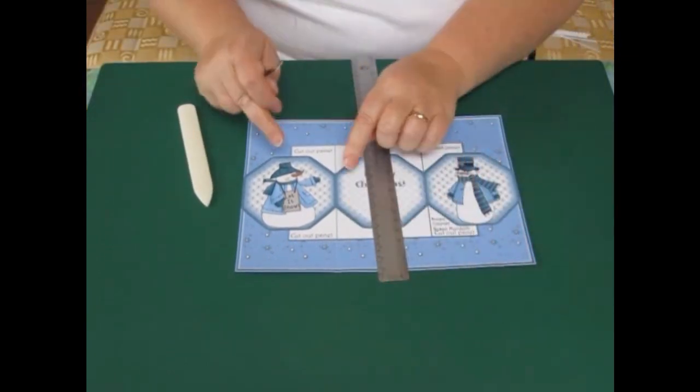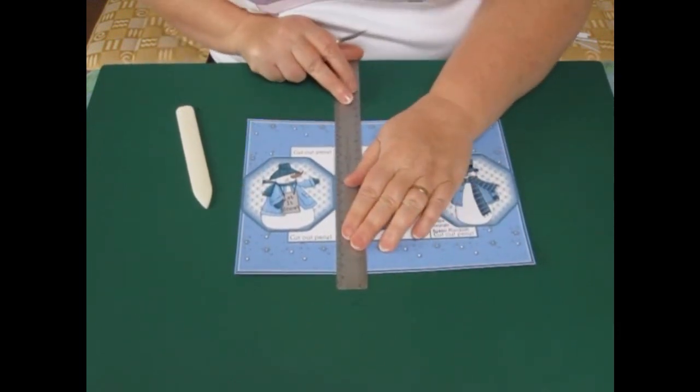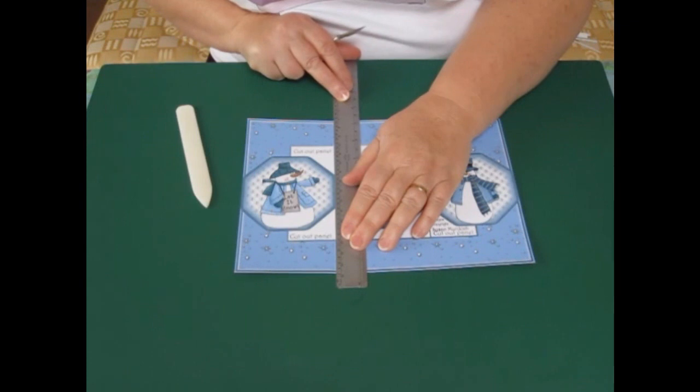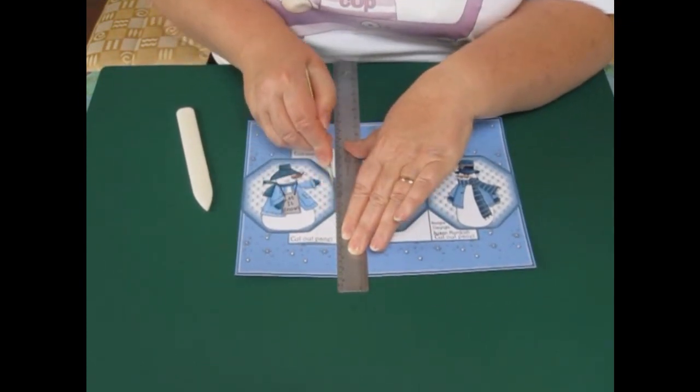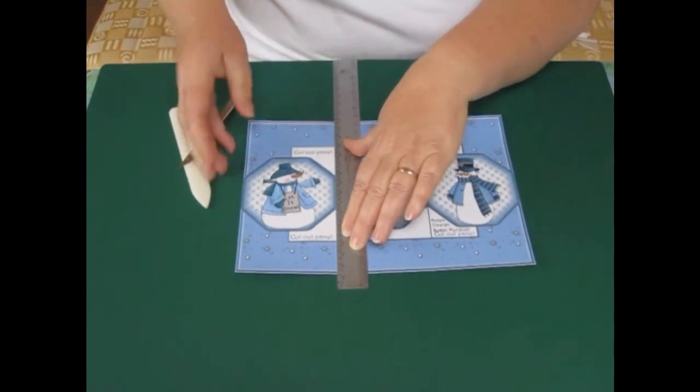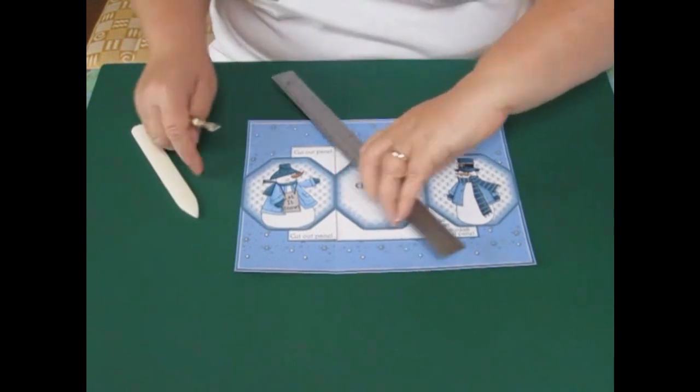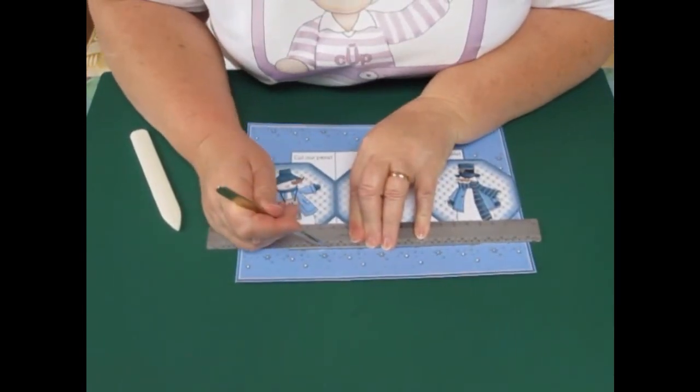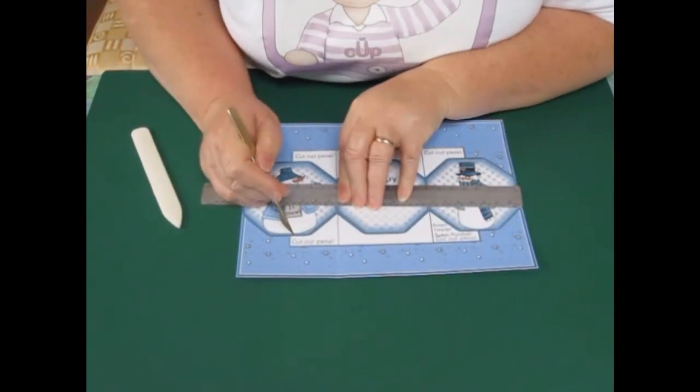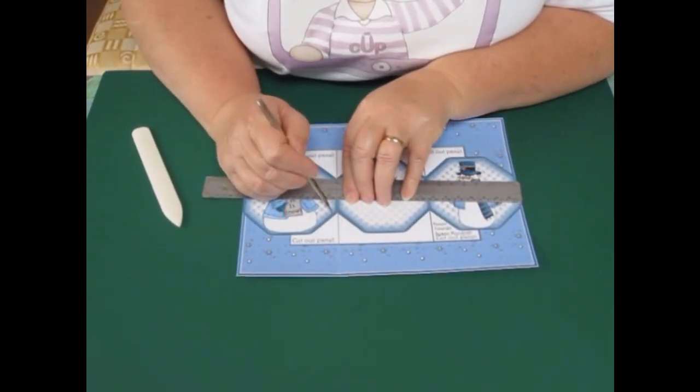Now we want to separate each side panel from the centre. So we need to cut on each side of the centre from there to there. This means that this is separated from there. We also need to cut round the one, two, three, four other lines.